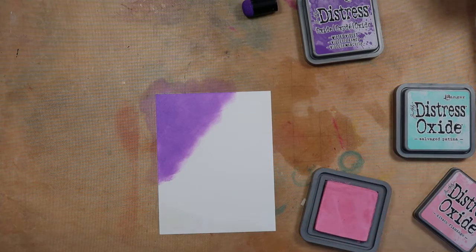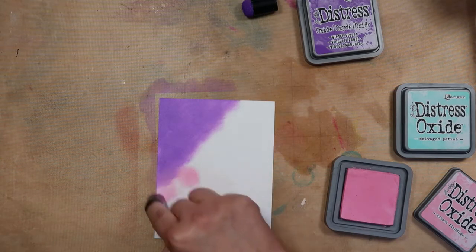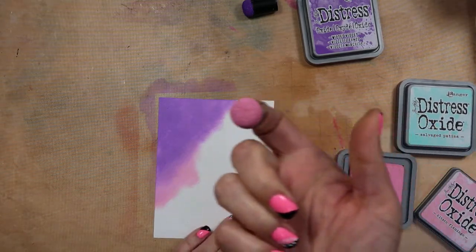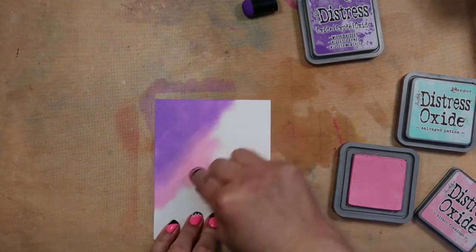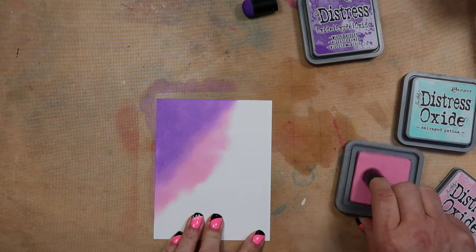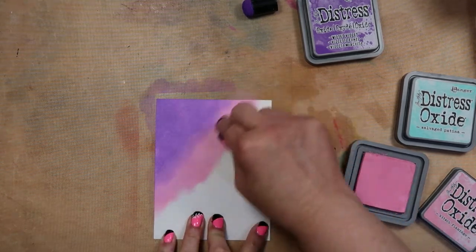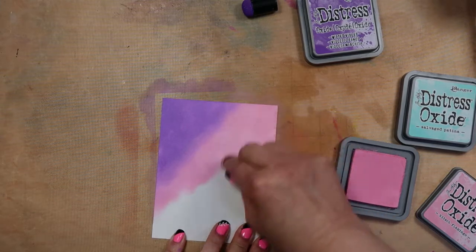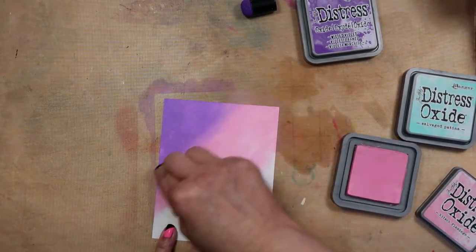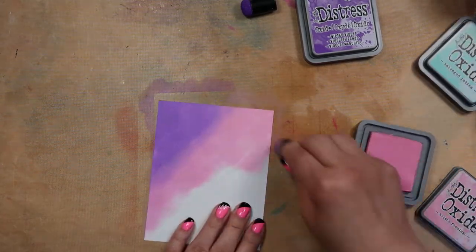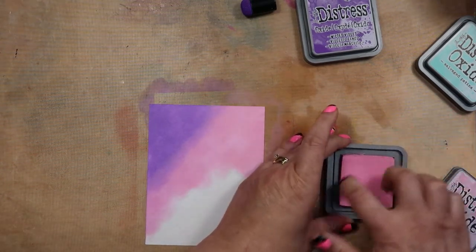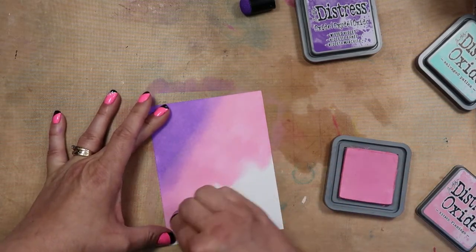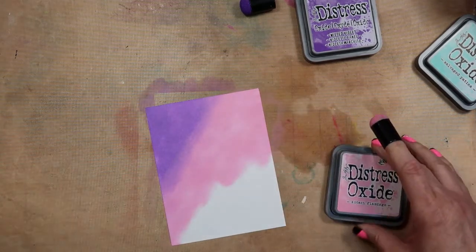I'll get about a third to a quarter somewhere in there, and then I'm going to come in with my Kitsch Flamingo next and I'm going to blend those two in together. I like the little round finger dabbers because they don't leave any harsh edges like the square foam pads do. We'll just come in and get a little bit more of that pink on there. This pink is just gorgeous.